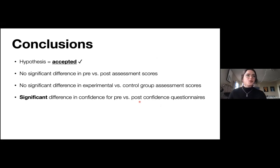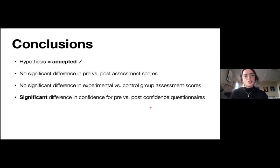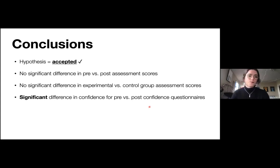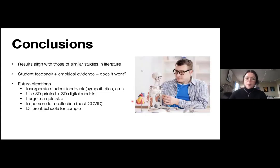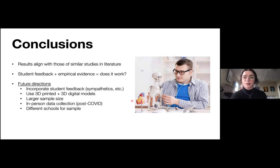Some conclusions we can draw from this study: the hypothesis postulated at the beginning is accepted. There was a significant difference in the confidence of students after interacting with the model, but there were no significant differences in pre versus post-assessment scores or experimental versus control group assessment scores. Our results do align with the literature, and when we combine student feedback with the empirical evidence collected, we can answer: does having a 3D model of this complex anatomy to study head and neck anatomy work? For this study, the answer is yes.